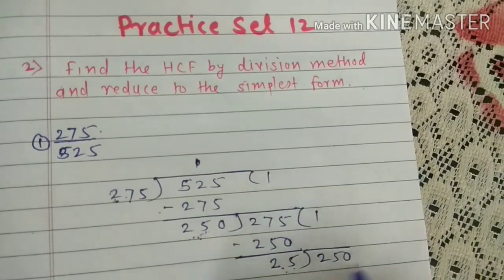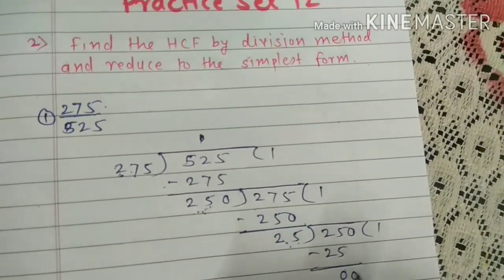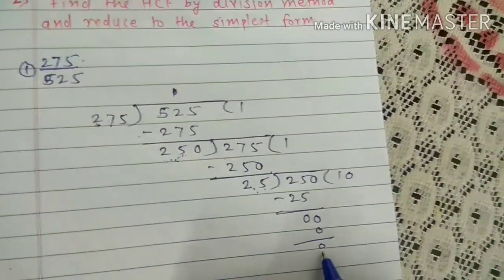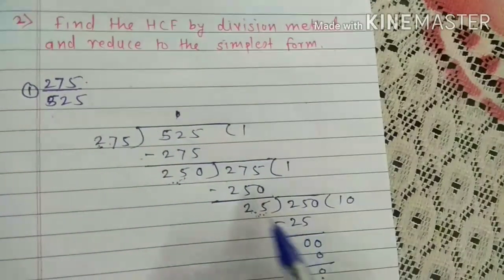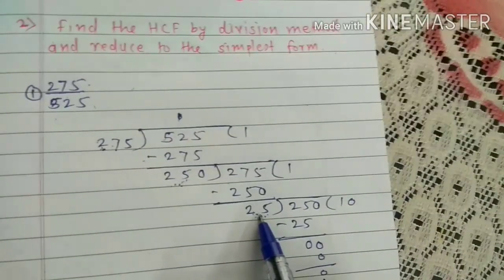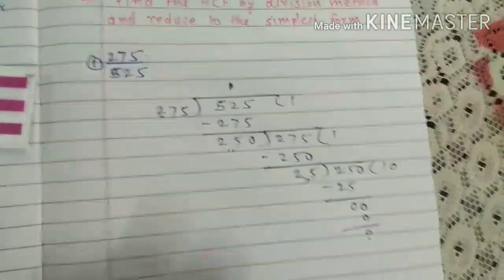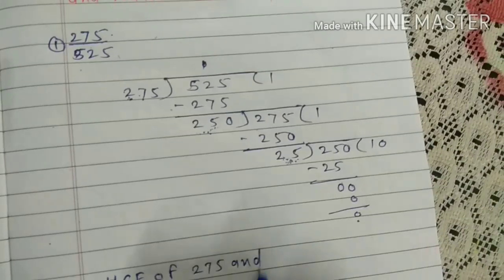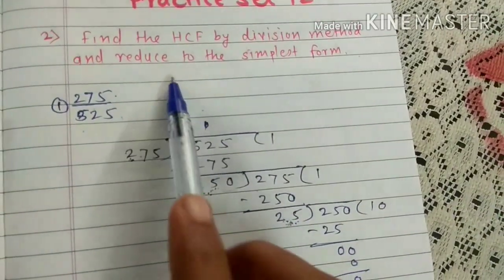25 ones are 25. Remainder is 0. So the answer has come. To check: the last divisor is 25. So HCF of 275 and 525 is equal to 25. Next, reduce to the simplest form.